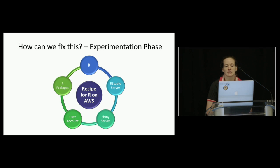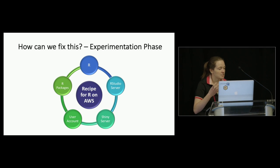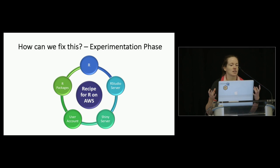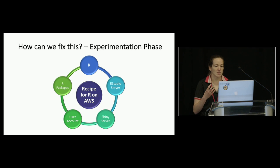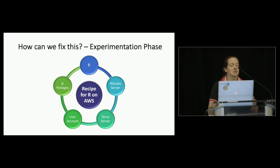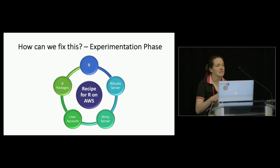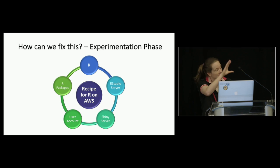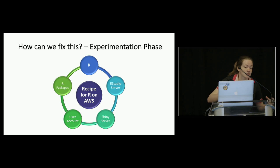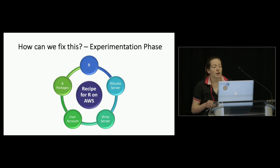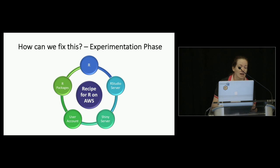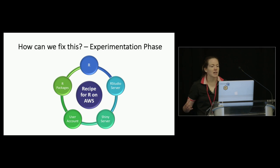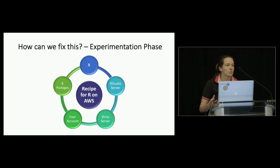So how can we fix this? Maybe we need a change of mindset. Maybe getting a new instance every day isn't a burden — maybe it's an opportunity for you to write the recipe for your perfect R tool. You have some basic things like R, the servers, and creating a user account, but after that you're free to customize these instances however you want.